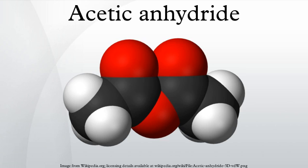Reactions: Acetic anhydride is a versatile reagent for acetylations, the introduction of acetyl groups to organic substrates. In these conversions, acetic anhydride is viewed as a source of CH3CO+. Alcohols and amines are readily acetylated. For example, the reaction of acetic anhydride with ethanol yields ethyl acetate: (CH3CO)2O plus CH3CH2OH gives CH3CO2CH2CH3 plus CH3COOH. Often a base such as pyridine is added to function as catalyst. In specialized applications, Lewis acidic scandium salts have also proven effective catalysts.